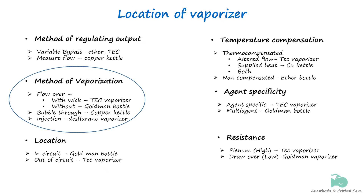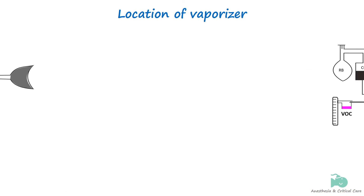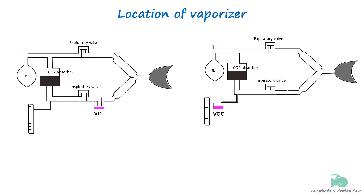Now let's move into another way a vaporizer is classified, that is based on their location. There are two possible locations for a vaporizer within an anesthesia breathing circuit. The vaporizer can be inserted into the fresh gas line that supplies the anesthesia breathing system, known as out-of-circuit, or alternatively it can be integrated directly into the breathing system itself, referred to as inside circuit.